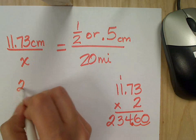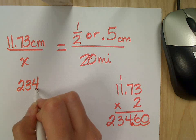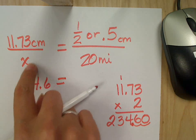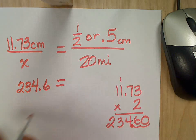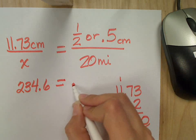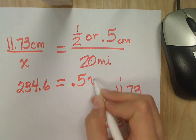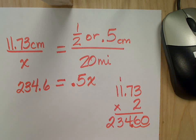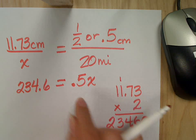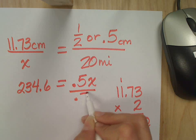So on one side of my equal sign, I have 234 and 6 tenths equals, and then I need to multiply x times a half or 0.5. So which one do you want to use? 0.5. Okay, we'll use 0.5. So it's 5 tenths times x. So divide? We have to divide by whatever is in front of my variable. So I'm dividing by what? 0.5 or half.